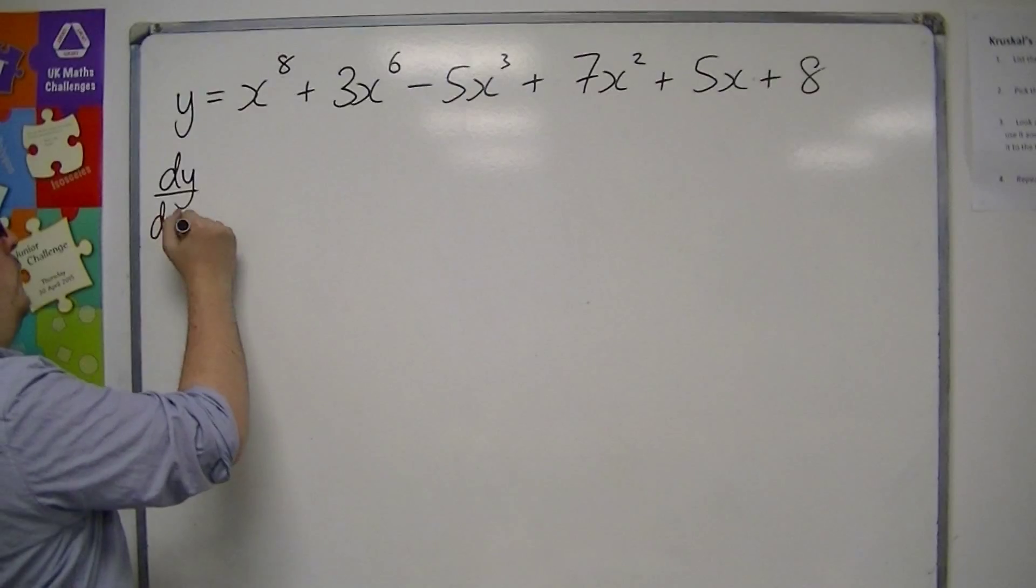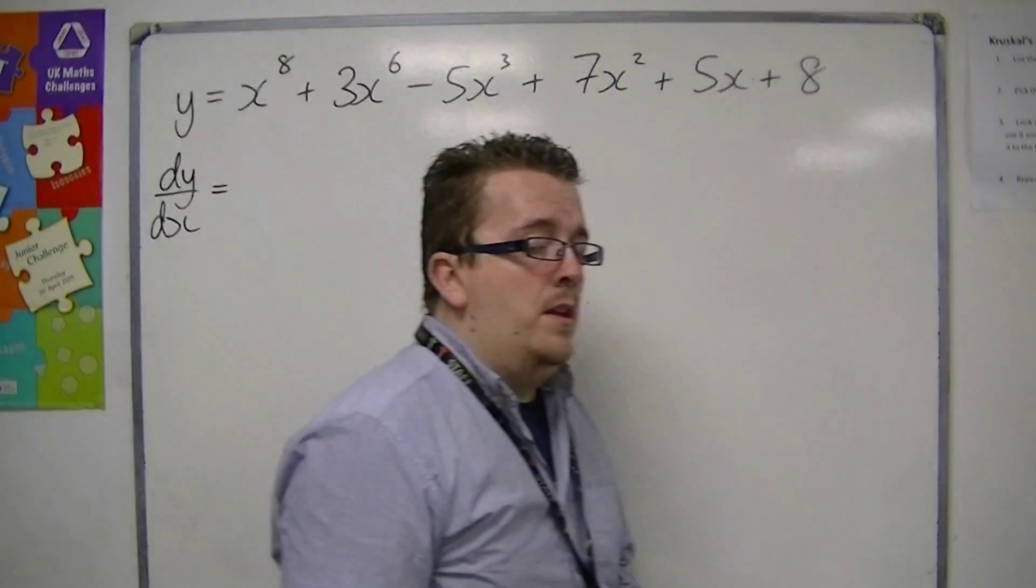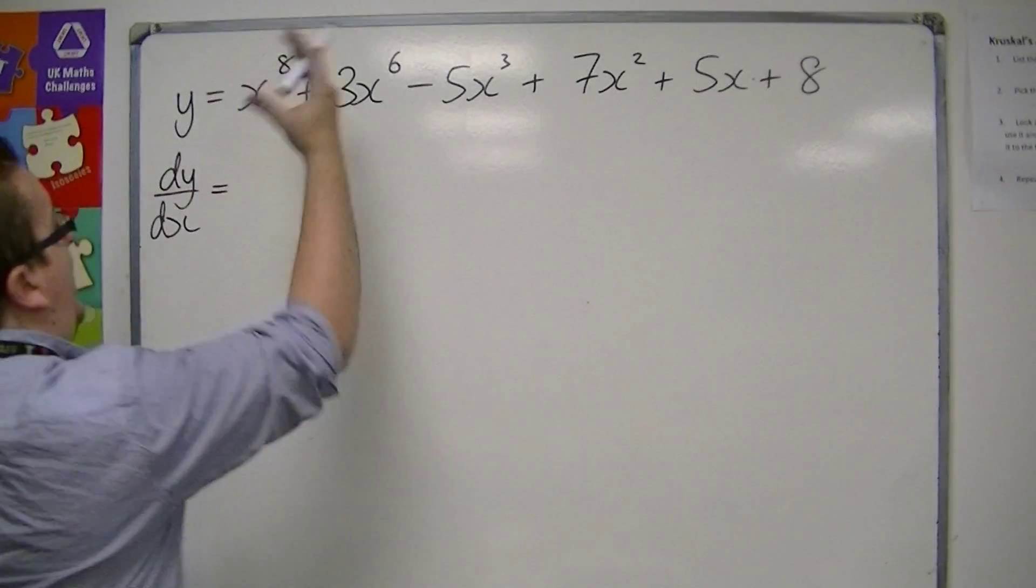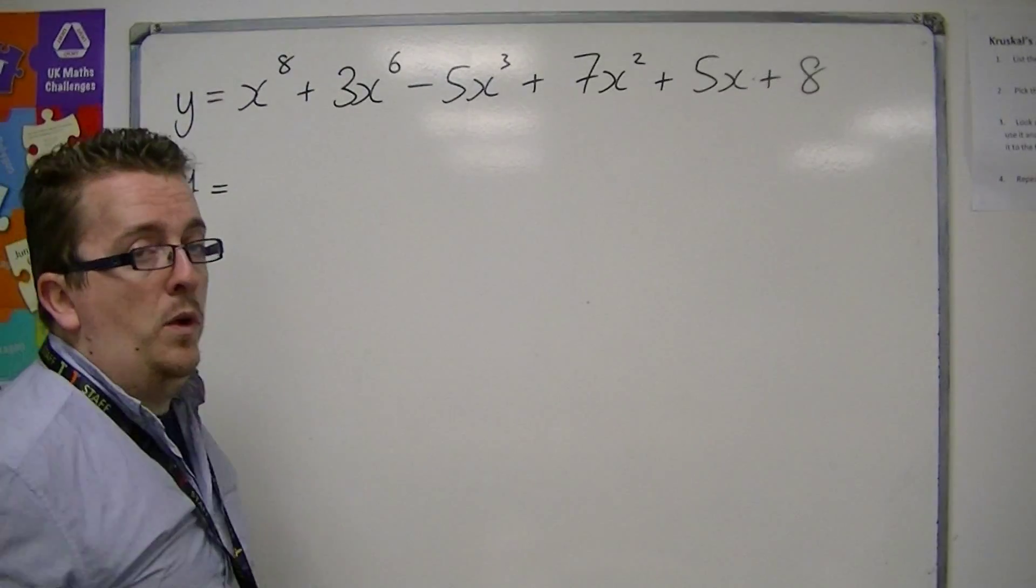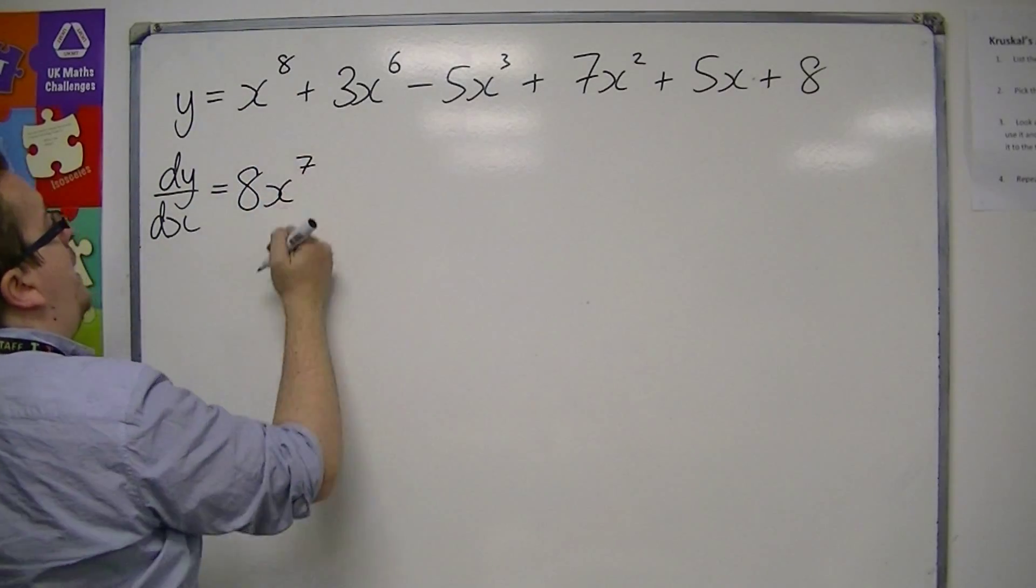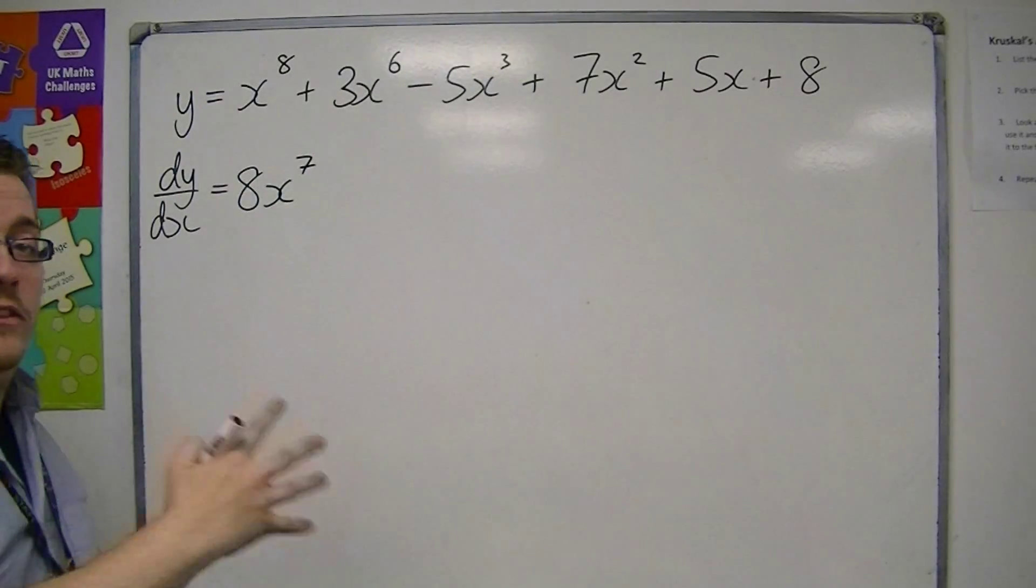So using the skill that we learned in the previous video, what we're going to be trying to do is make sure the power comes down at the front and you take one off the power. So the 8 comes down to the front, take one off the power. So x to the 8 becomes 8x to the 7.